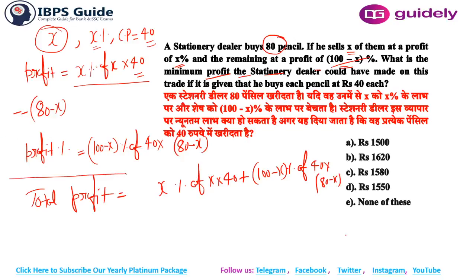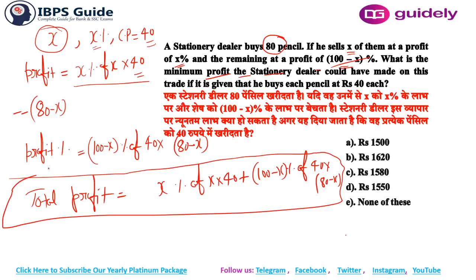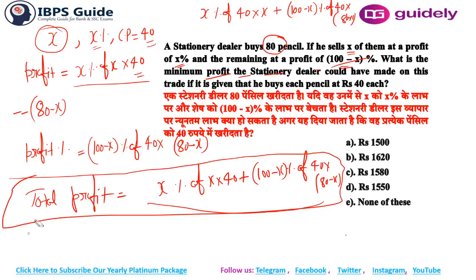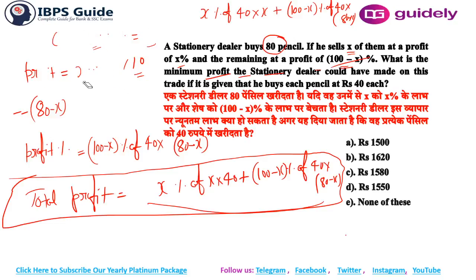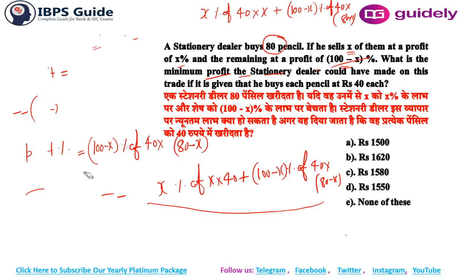Now, this is the exact real profit expression, but they are not asking for total profit — they are asking what could be the minimum profit on this whole transaction. So I need to write: profit = x percent of 40 into x, plus (100 minus x) percent of 40 into (80 minus x). Now I have to find the minimum of this, and I need to explain the concept of minimum.